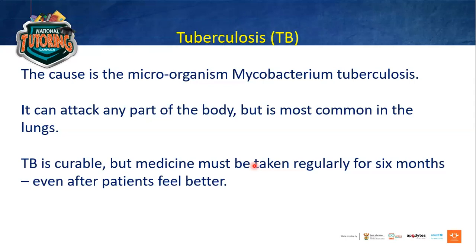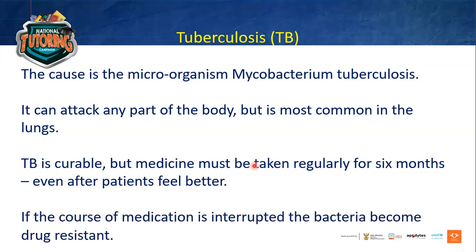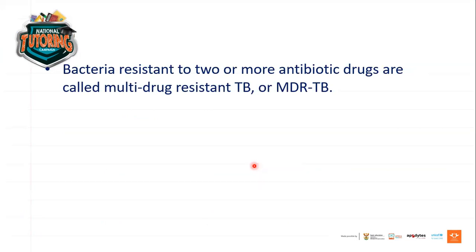If given strict instructions by your doctor to take medication a certain number of times a day for six months, that is exactly what you must do. If the course of medication is interrupted, the bacteria becomes drug resistant. Bacteria resistant to two or more antibiotic drugs are called multidrug-resistant TB, or MDR-TB.